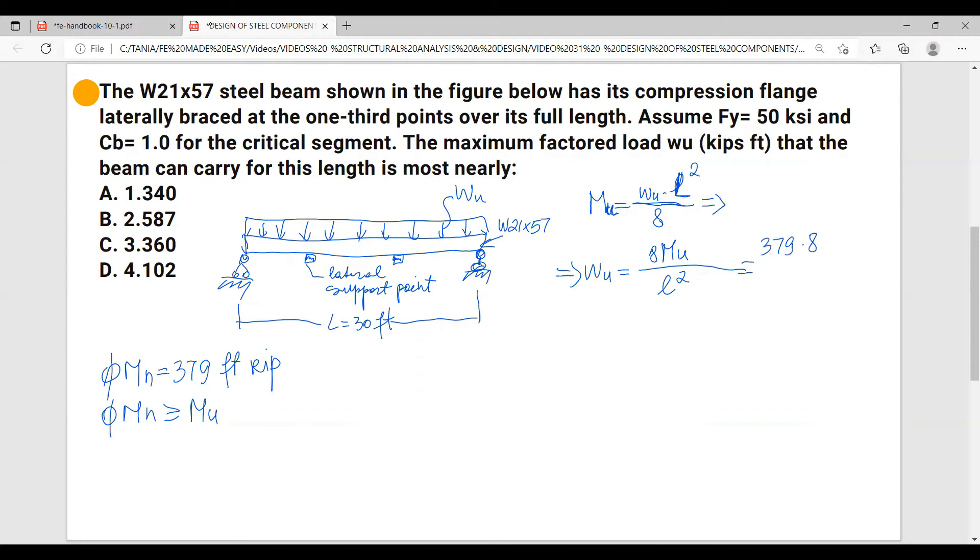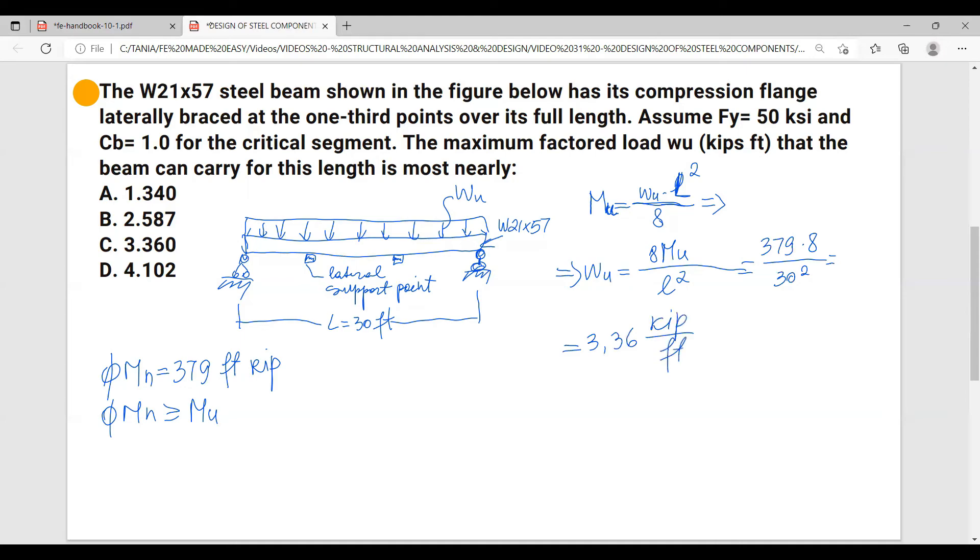And this is going to be equal to 8 times 379 over 30 squared, and I'm getting 3.36 kips per foot. And the correct answer is C, 3.36.